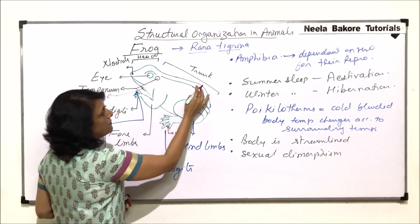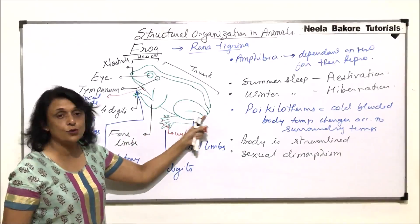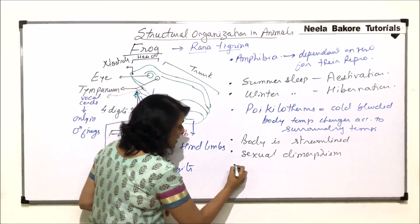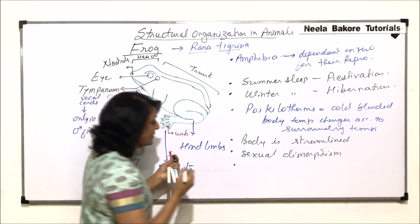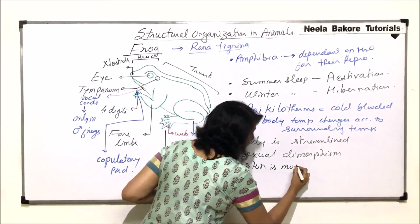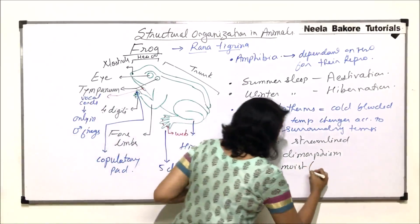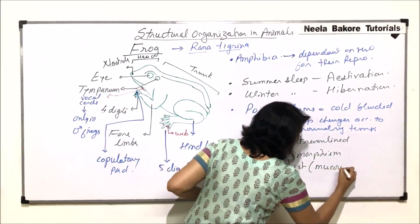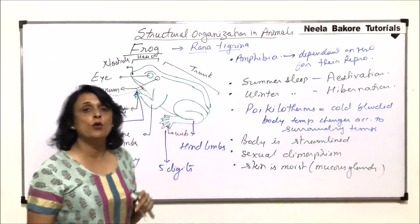Now on the posterior side, we find a little hump and a median line is also there. Externally, when we look at the animal, we find that the skin is moist and it is kept moist by mucus glands. So this is because of mucus glands.